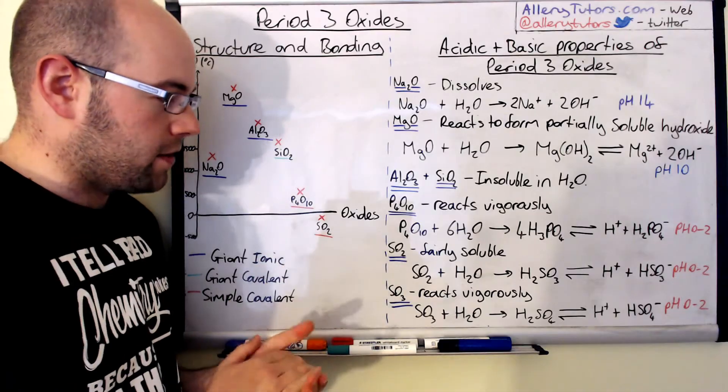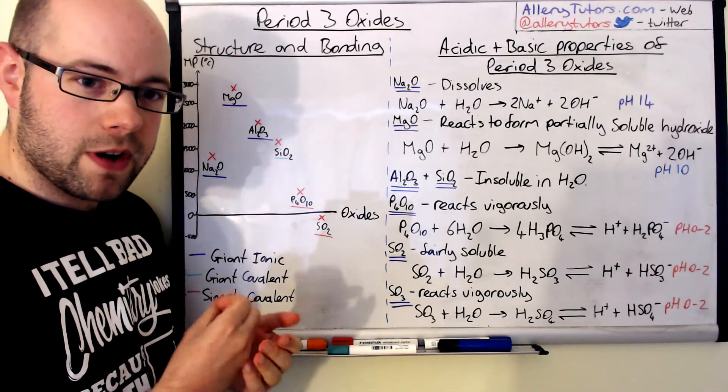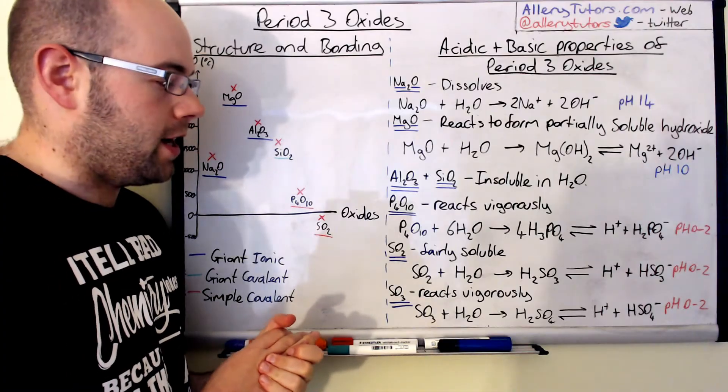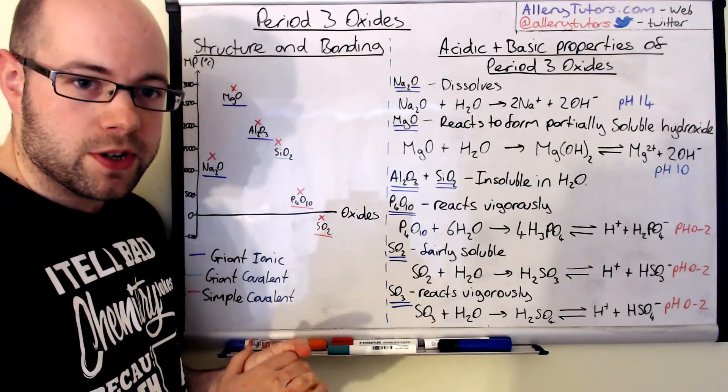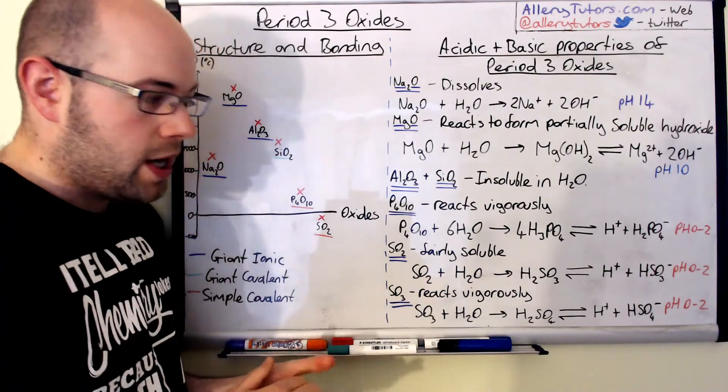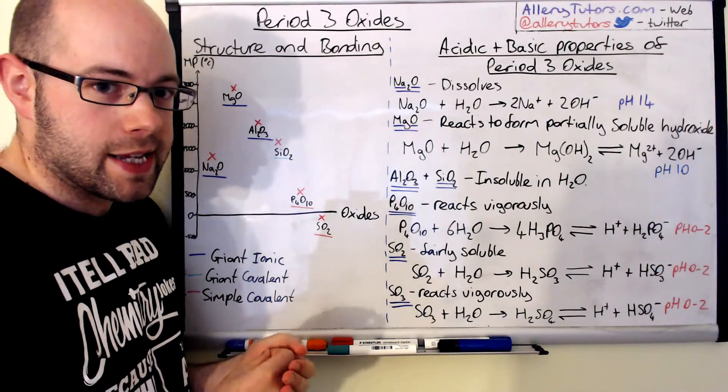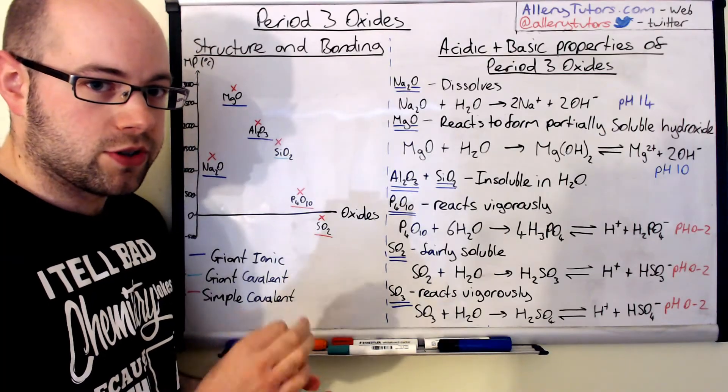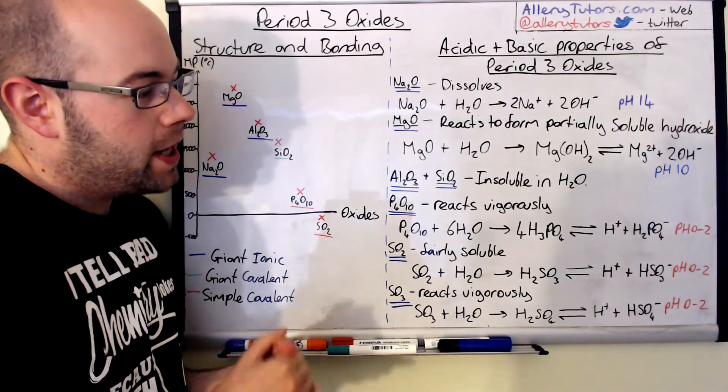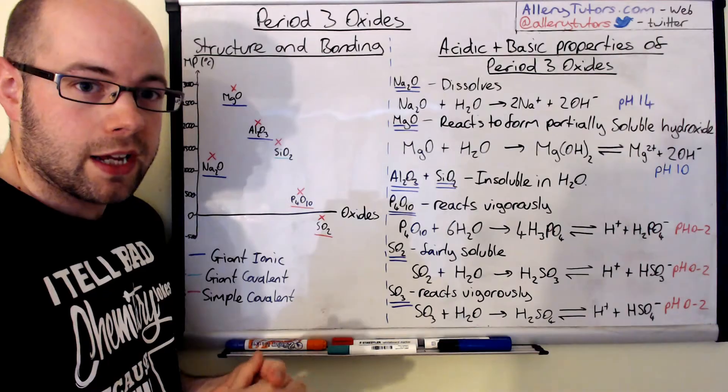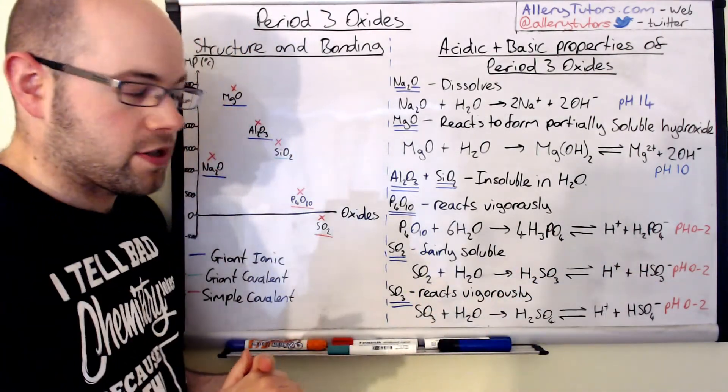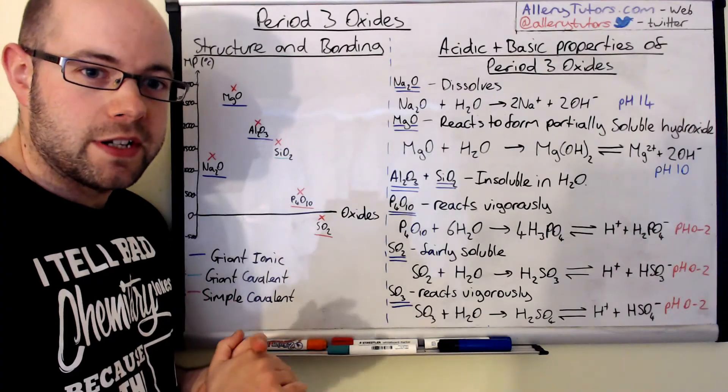If we go to the next one, sulfur dioxide, this is this white misty fume, it's a very choking gas, fairly soluble in water, and it will react to form sulfurous acid which is H2SO3. Watch out for that really carefully. Sulfur dioxide does form sulfurous acid, not sulfuric acid directly. And this will dissociate like any other acid and it will dissociate to form H plus and HSO3 minus. The pH is 0 to 2.